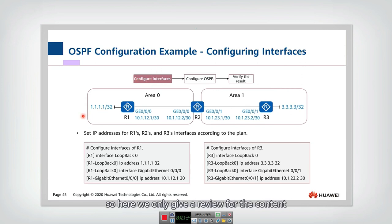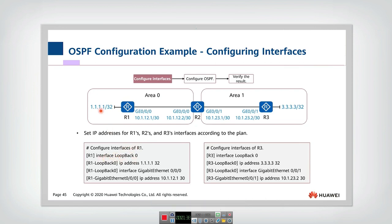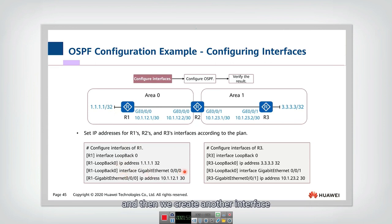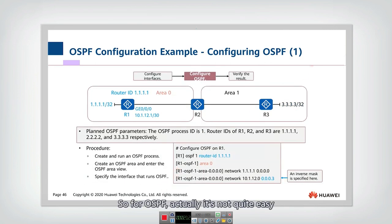Let's configure the interfaces — this is straightforward and was covered in previous slides, so here we give a review. For Router 1, which has two interfaces, we first create the loopback interface, set its IP address with a 32-bit network mask, then create and configure the second interface. Similarly, R3 and R2 are configured with their respective interface IP addresses.